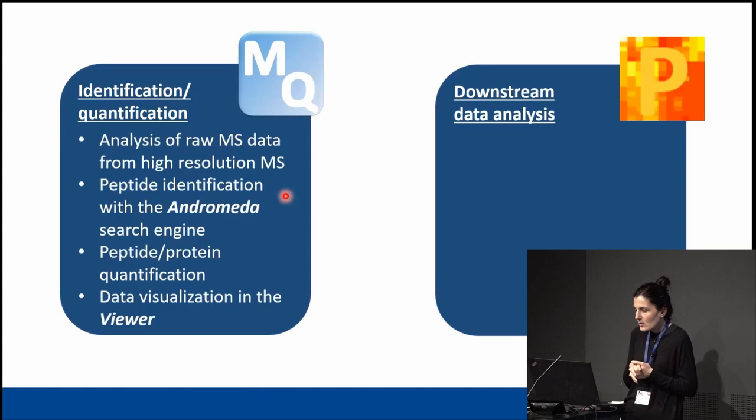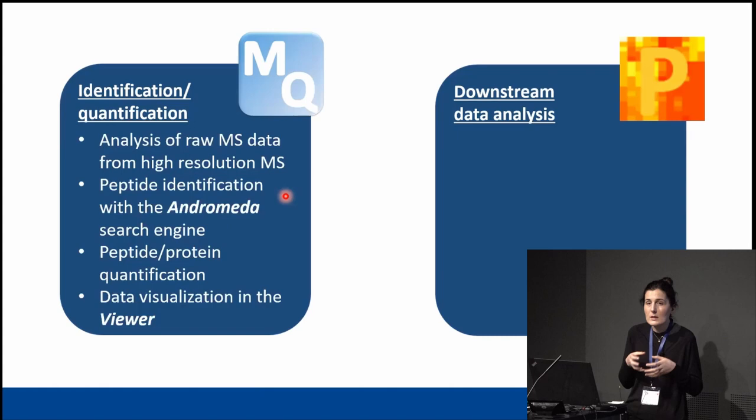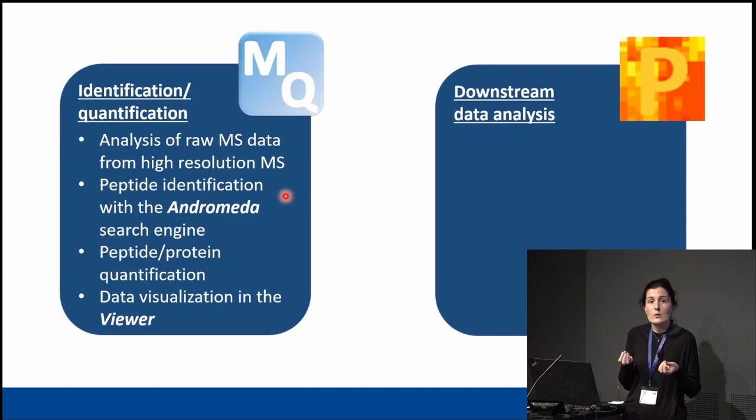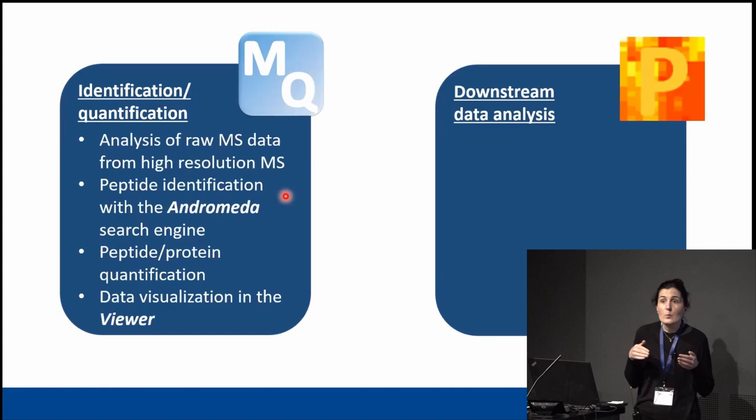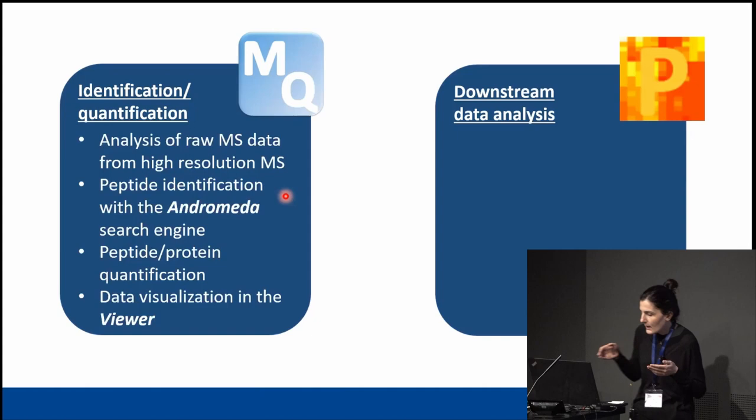Now MaxQuant gives you the list of output tables, but there's so much information that you have to extract the important parts from these datasets. That's why we created Perseus — to make it easier for the user to get this information out of the MaxQuant output tables. Perseus takes as input any of the output tables of MaxQuant and performs a list of different analyses.